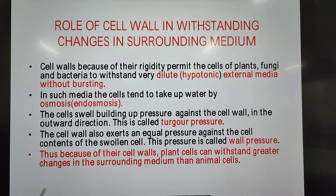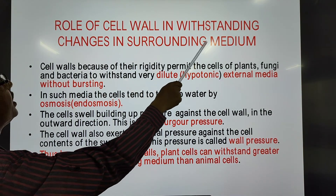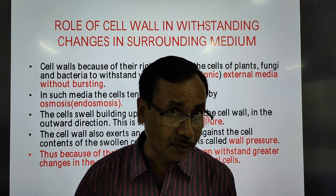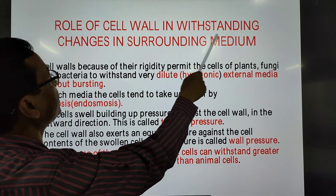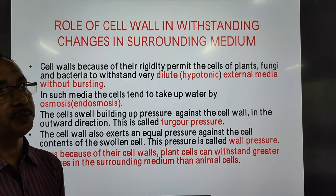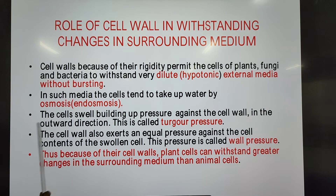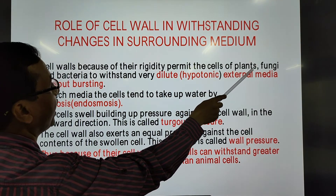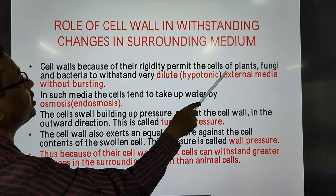Now let us see the role of the cell wall in withstanding changes in the surrounding medium. The cell wall is extremely strong and tough; it has the capability of withstanding changes in the surrounding medium. Because of their rigidity, cell walls permit the cells of plants, fungi, and bacteria to withstand very dilute hypotonic external media.